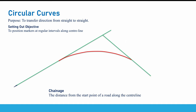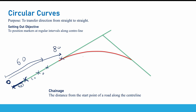Let's say this road has started from a point where the distance is zero. We are going to position markers with an interval of, for example, 20 meters. After 20 meters we locate another marker, so the interval between each two markers is 20 meters. That means from the beginning to a point here the distance would be 60 meters, the next 80 meters, and then 100 meters. This is a very important term you need to understand — it is called chainage.